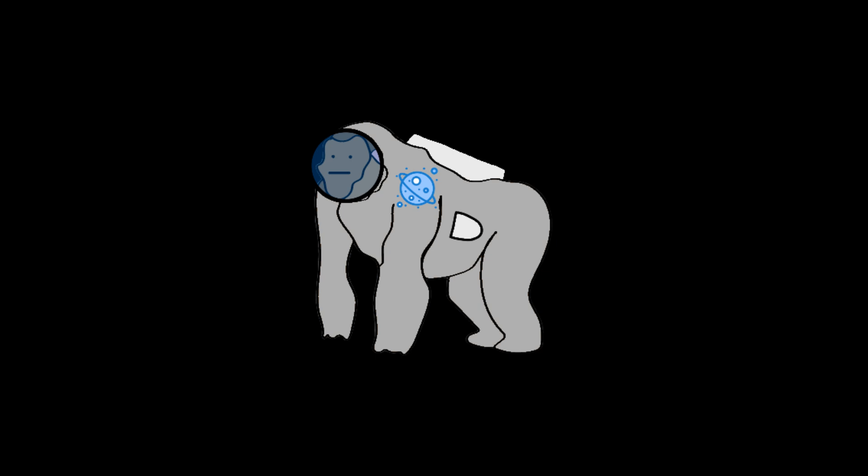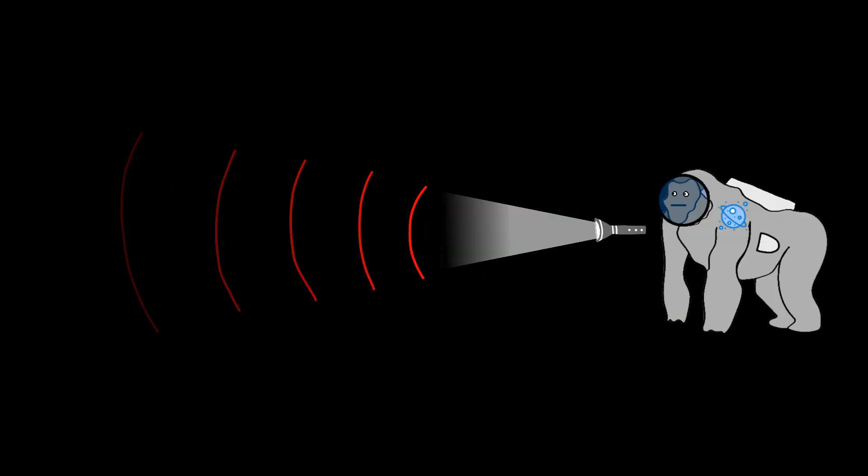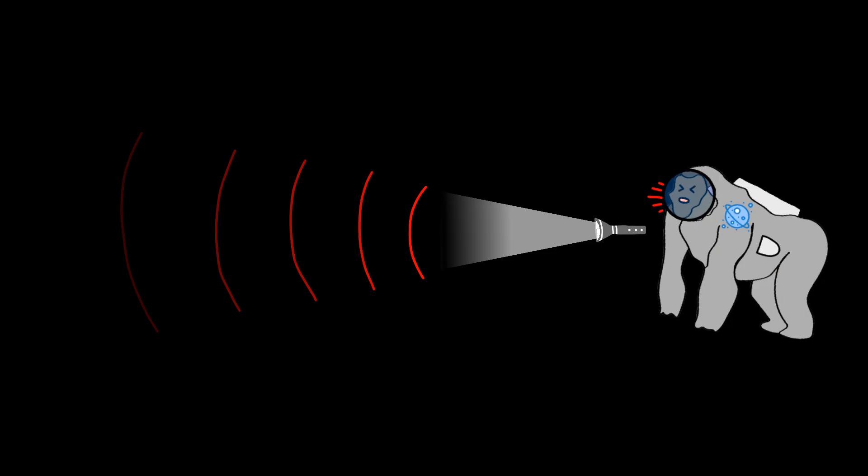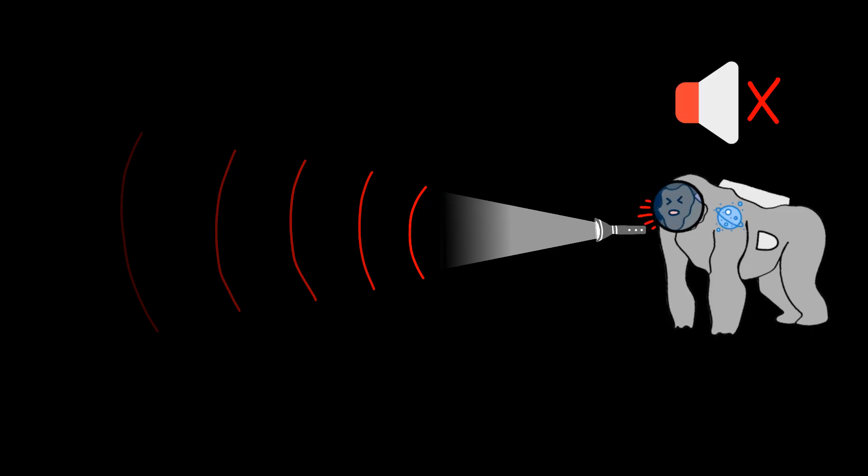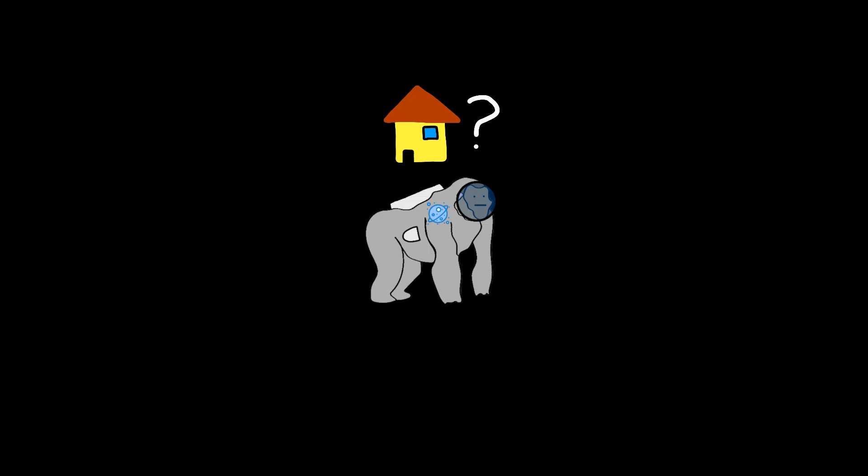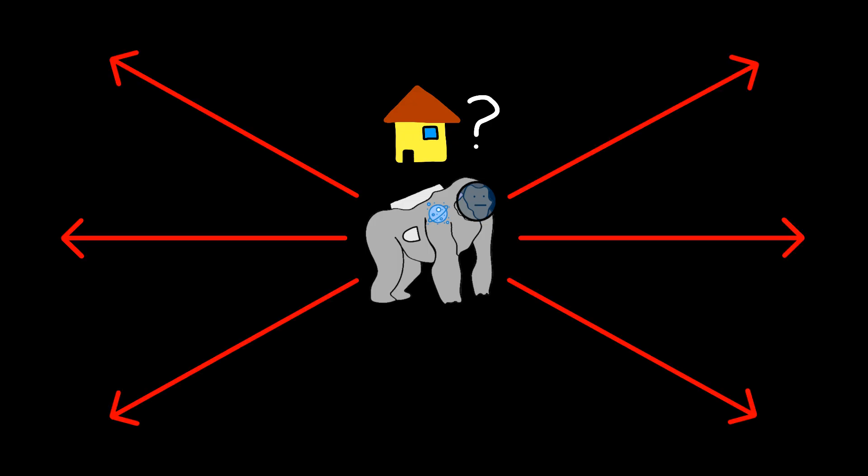Imagine being a monkey astronaut floating in the middle of this void. Monkey turns on flashlight—light disappears into darkness. Monkey screams for help—no sound in space anyway. Monkey looks for home. Every direction looks exactly the same: pure, endless, terrifying nothing.